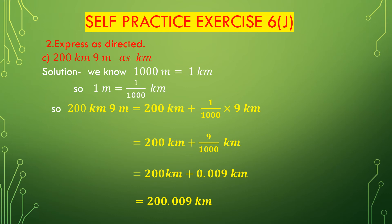Now we solve question number 3, part C — 200 kilometers 9 meters as kilometers. We have to convert meters to kilometers. We know 1000 meters is 1 kilometer, so 1 meter will be 1 divided by 1000 kilometers. We have to convert 200 kilometers 9 meters to kilometers.